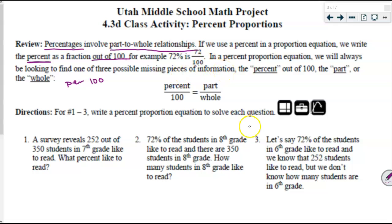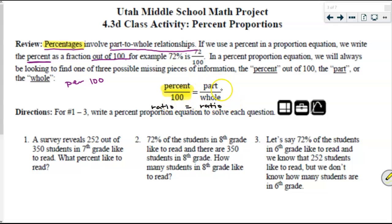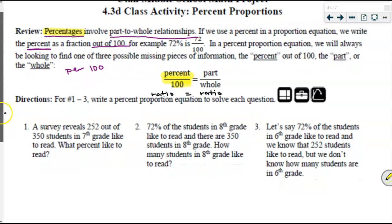In a percent proportion equation, we will always be looking to find one of three possible missing pieces of information: we could be looking to find the percent, we could be looking to find the part, or we could be looking to find the whole amount. What we see here is a ratio equal to a ratio. Since we are dealing with percents, one whole ratio is already taken up — it's the percent out of 100. The other part comes from the story: face cards out of a whole total deck of cards, or red marbles out of the whole total marbles in the bag. Let's take a look at the first example and work on that together.